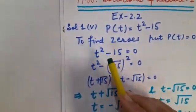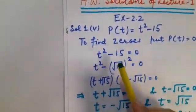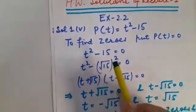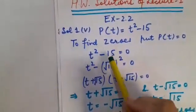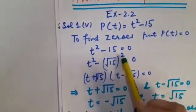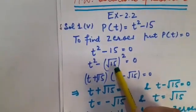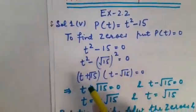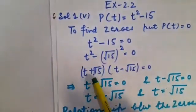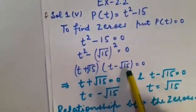As you put t² minus 15 equal to 0 here what can you do? You don't have the middle term so factorization method cannot be adopted. See in place of this 15 I am going to write root 15 whole square because root 15 into root 15 will become 15 only. Now I am going to apply identity a² minus b² that is a plus b into a minus b.